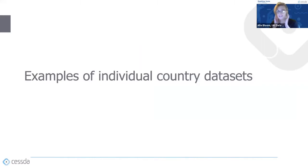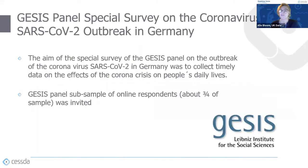Now on to individual country datasets. The first example is the GASIS panel special survey on the coronavirus SARS-CoV-2 outbreak in Germany. The aim was to collect timely data on the effect of COVID-19 on people's daily lives. It uses a sub-sample of about three-quarters of the GASIS online panel respondents, allowing a rapid response. Using existing respondents is common — many existing surveys have stepped in to ask questions about COVID, so that's another good place to look for data.